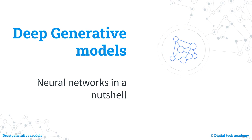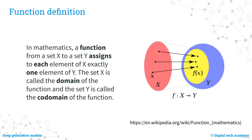Welcome to this lecture on neural networks. We will give you a general overview of the topic. In mathematics, a function is a relation between a set of inputs called the domain and a set of possible outputs called the codomain, assigning a unique output to each input. A function can be thought of as a box that takes in a numerical input and produces a numerical output.